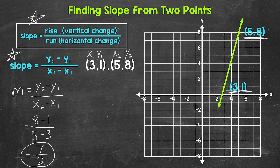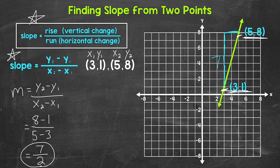We did not need the line on the graph to find the slope, because we were just able to use the coordinates. But I wanted to include it to give us a visual of the slope and show that counting units gives us the same slope. Working from left to right, the rise is 7 units going up to align with the other point, and the run is 2 units over. So we get the same slope: rise of 7, run of 2.